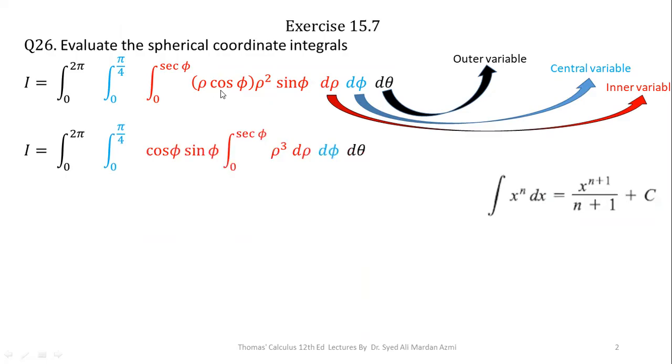Please note that with respect to rho, cos of phi and sine of phi are constant, we can take it outside of the most inner integral and when we multiply rho squared with rho, it becomes rho cubed. For the limits 0 to sec of phi.